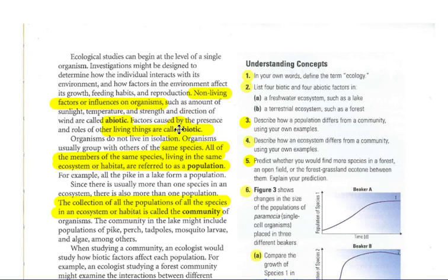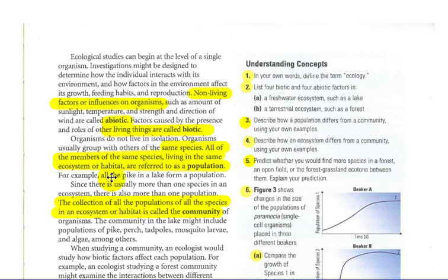Try to remember: biotic is like biology, the study of living things. So biotic means living, and abiotic means non-living. Organisms do not live in isolation — they usually group with others of the same species. All of the members of the same species living in the same ecosystem or habitat are referred to as a population.